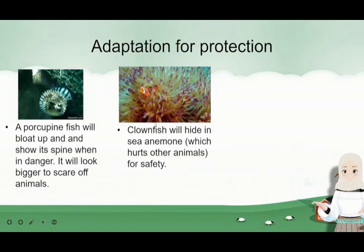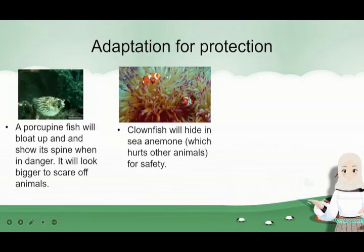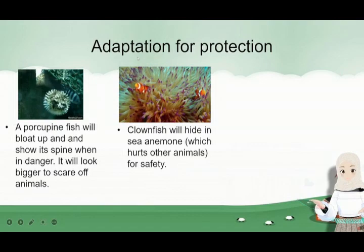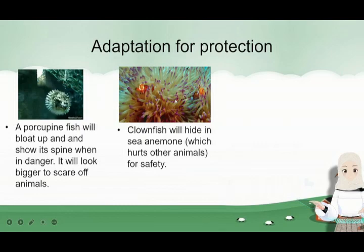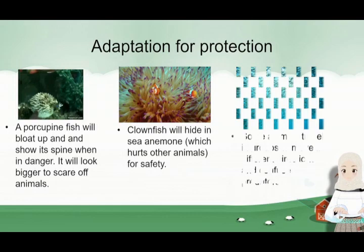Next, a clownfish. A clownfish will hide in sea anemone. The wiggly-wiggly thing satu namanya sea anemone. The nemo fish, they're called clownfish. They hide in the sea anemone because the sea anemone hurts other animals. So, if ia rasa indah selamat, ia tapok arah sea anemone-nya ni. And the sea anemone will hurt other animals.